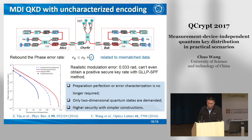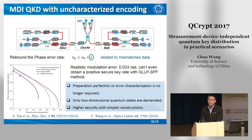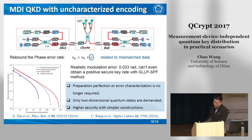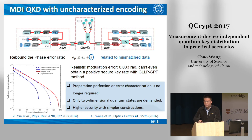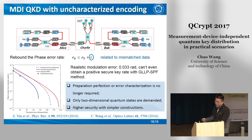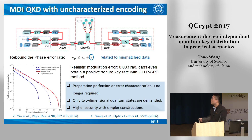Based on this idea, we proposed an MDI-QKD scheme with uncharacterized quantum states and realized an experimental system to verify its feasibility. In our system, state characterization is no longer needed, and we only require that the quantum states are prepared in a two-dimensional Hilbert space. With the help of the mismatched basis data, we can bound the eavesdropper's information directly and obtain the final secret key rate, which provides the MDI-QKD system with higher practical security and a simpler construction.